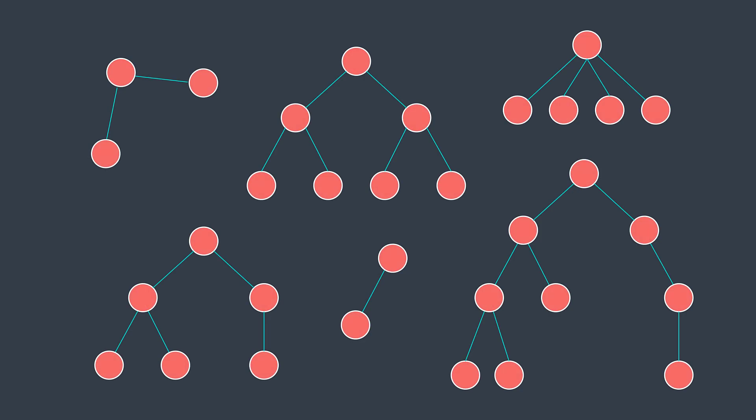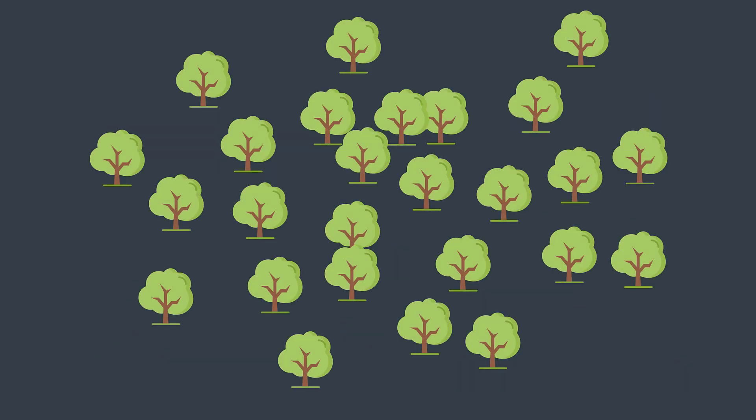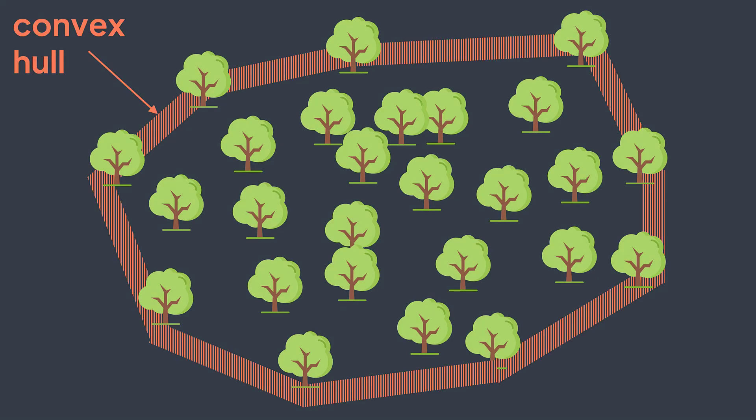Imagine that you have a set of trees, real trees, and you want to surround them using as little fence as possible. What you need to do is find the convex hull of your set of trees.